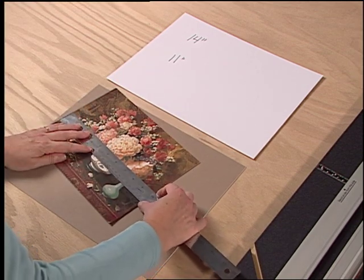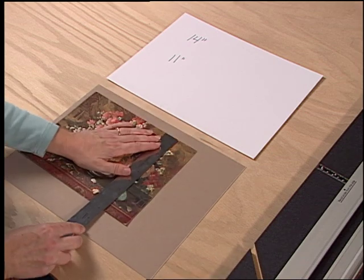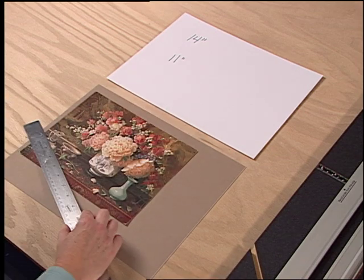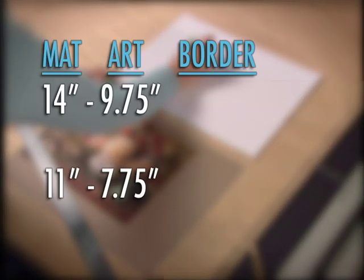Now use the ruler to measure the artwork from left to right and from top to bottom, determining the amount of artwork to be exposed in the opening of the mat. Write these numbers down next to the frame sizes.